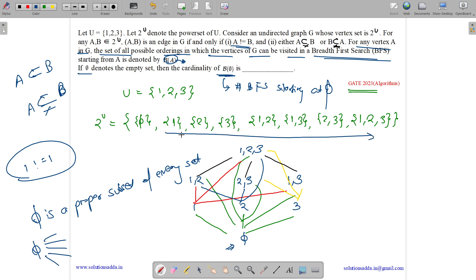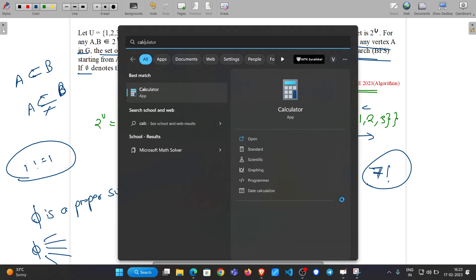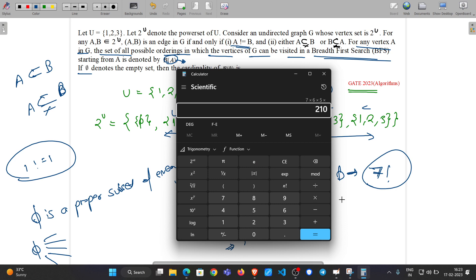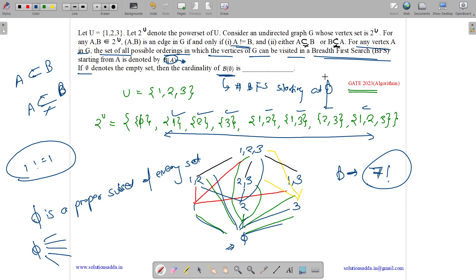Thus we will have edge from phi to every other possible set. We will have 7 edges from phi to {1}, {2}, {3}, {1,2}, {1,3}, {2,3}, and {1,2,3}. And if we have this edge, which means from phi we can go to any vertex, which means from phi we have 7 possible pairings and these can be organized in 7 factorial ways. So the answer is basically 7 factorial.